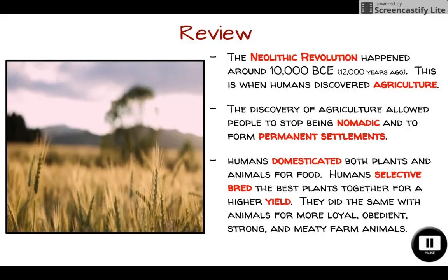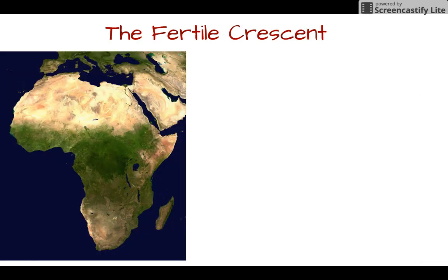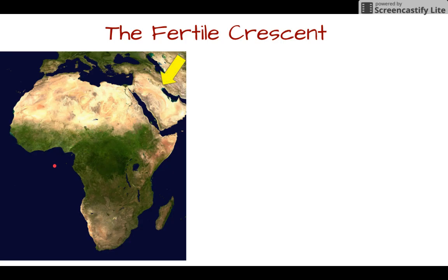The Agricultural or Neolithic Revolution is happening in a place that historians call the Fertile Crescent. Looking at a picture of Africa, we also see the region called the Middle East, and that is where agriculture first develops. It's known as the Fertile Crescent because it makes this upside-down U-shape, like a crescent. This is where the first agricultural communities developed.